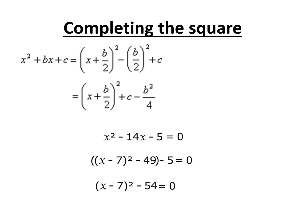The other thing completing the square is used for, as I mentioned before, is circles. If you've got a circle in a more complicated form, you can use completing the square to simplify it down into the familiar form: (x + a)² + (y + b)² = r². That's not covered in this video — I'll be doing another video on circles soon and will go through that in more detail.